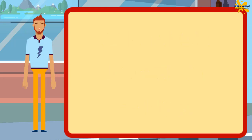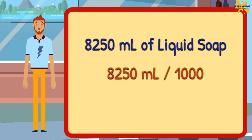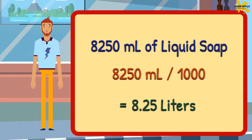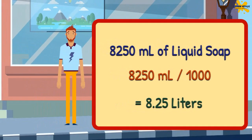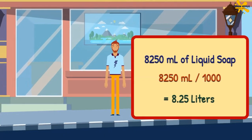Now, if I sell 8,250 milliliters of liquid soap daily, how much will it be in liters? You need to divide 8,250 milliliters by 1,000. We get 8.25 liters. If you got your answer accurate, you did great work. And if your answer was not matching, replay the video and practice more.